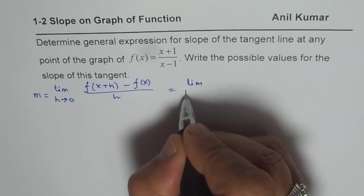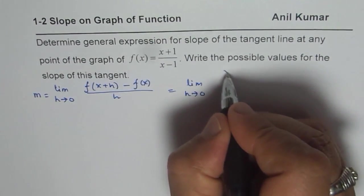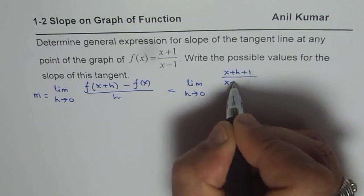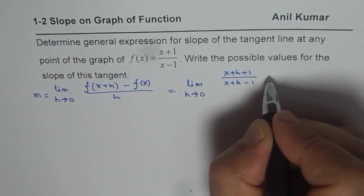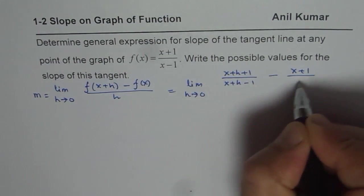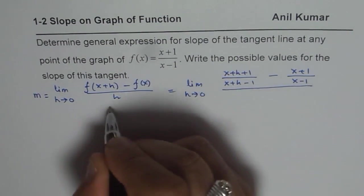We have limit as h approaches 0. Replace x with x+h, so we get [(x+h+1)/(x+h-1)] minus f(x), which is the same expression (x+1)/(x-1), and everything is divided by h.